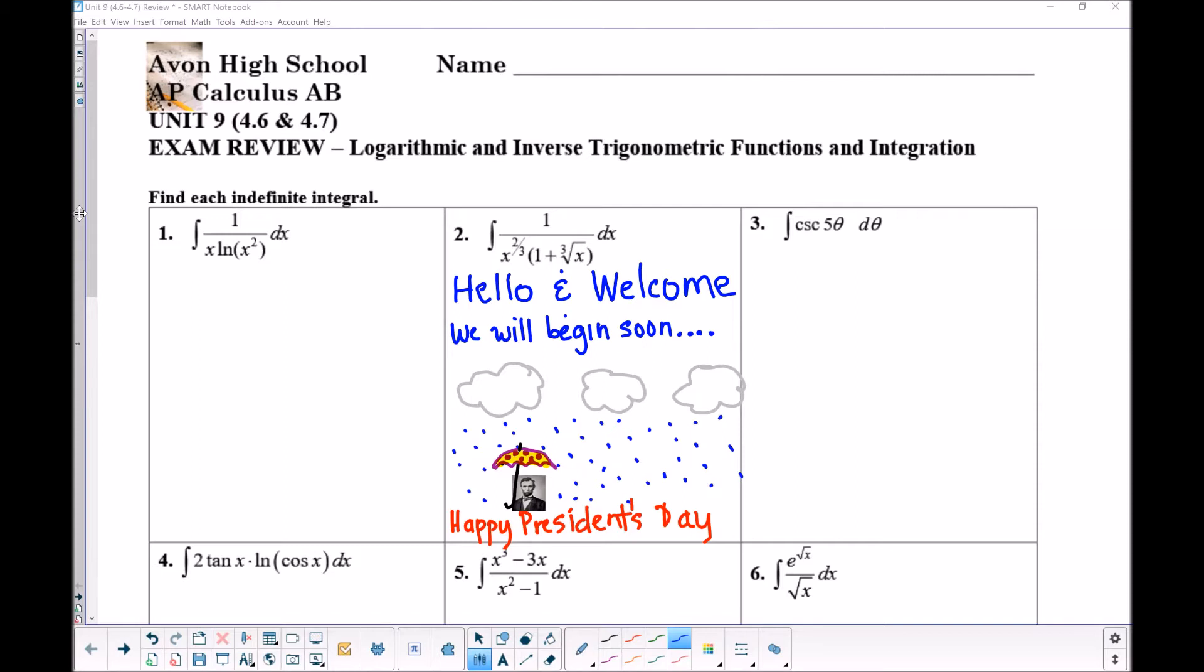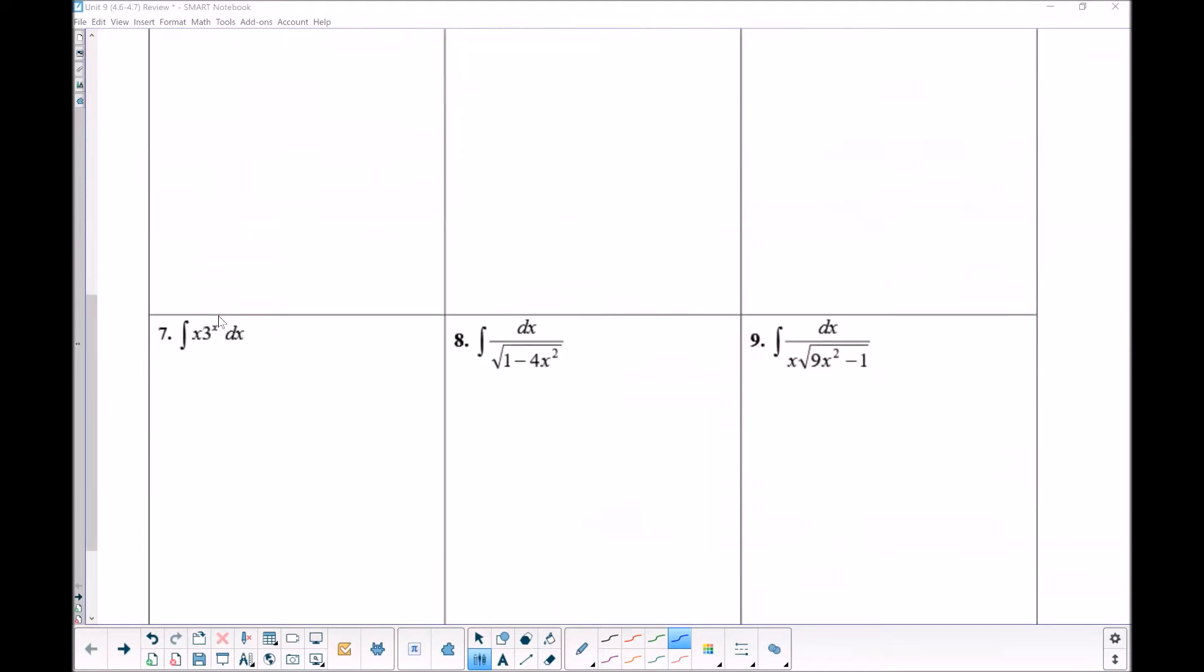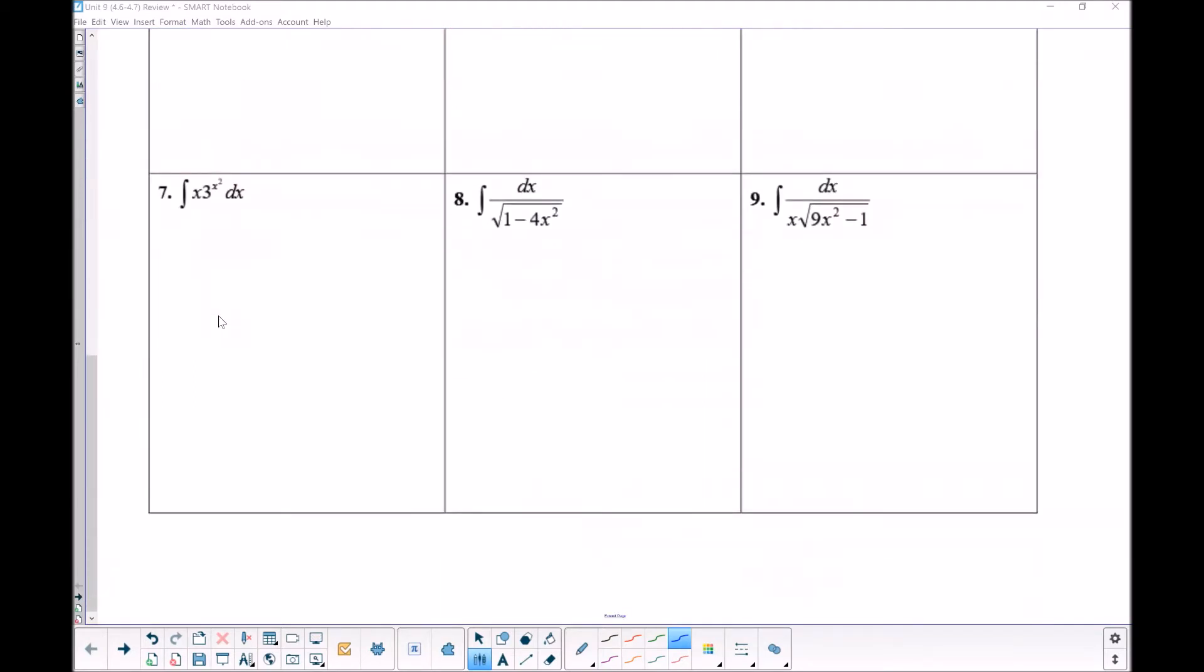We talked about that in class where it's very often the case that your U might end up being the denominator of the entire fraction so that you can use a one over U form. And it's also quite possible that you're going to see quite a few inverse trig forms. One of the things that I wanted to kind of draw your attention to kind of early is a problem down the list a little bit, number seven.